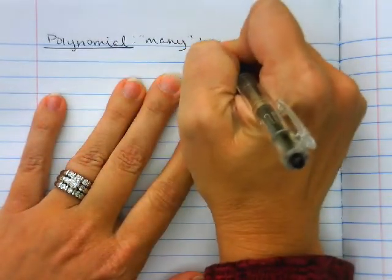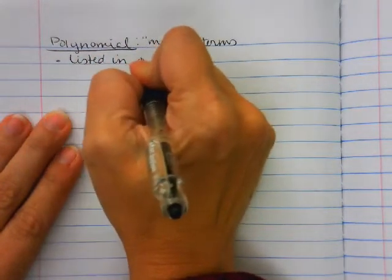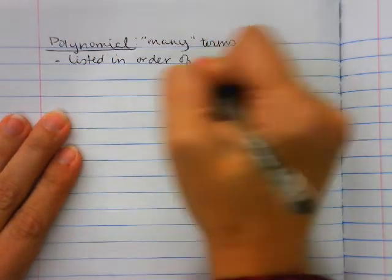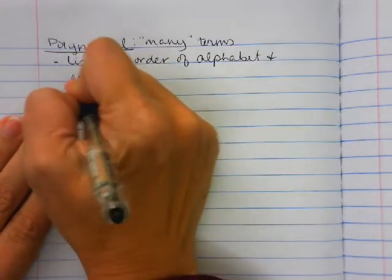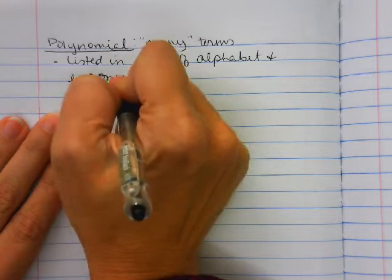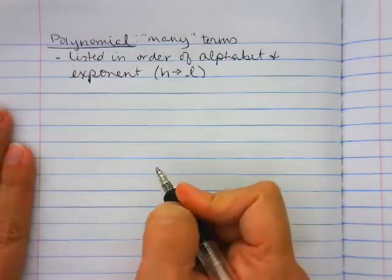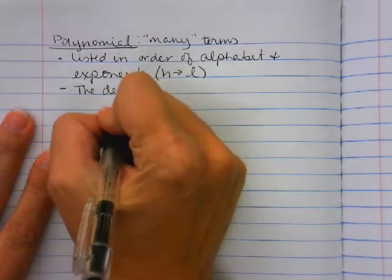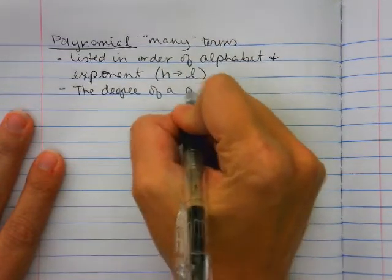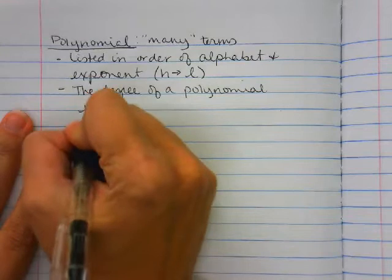Remember, we list our polynomials in order of alphabet and exponent, meaning highest to lowest. And remember, we also have the degree of our polynomial, which is the highest exponent.